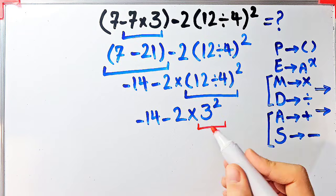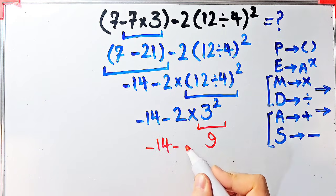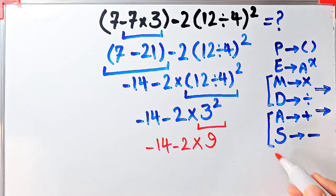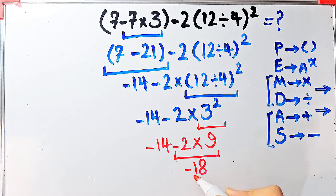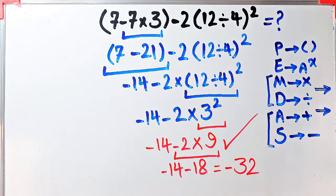Three to the power of two equals nine. Now we have negative fourteen minus two times nine. We have subtraction and multiplication. First we simplify the multiplication because it has higher priority than subtraction. Negative two times nine equals negative eighteen. Now we have negative fourteen minus eighteen, which equals negative thirty-two. The final answer of this question equals negative thirty-two.